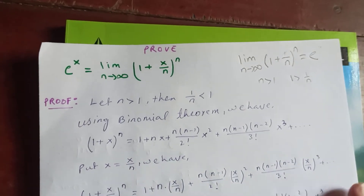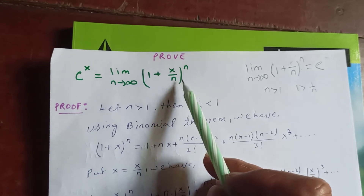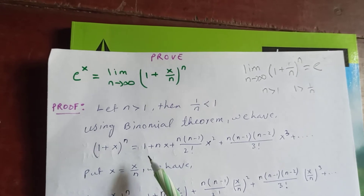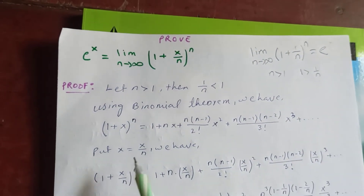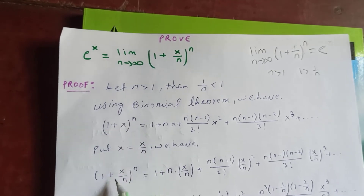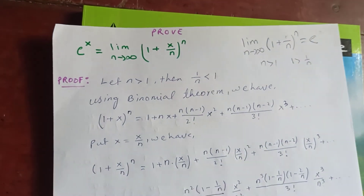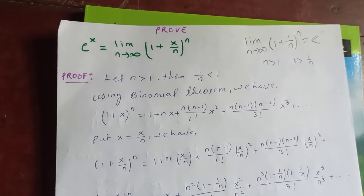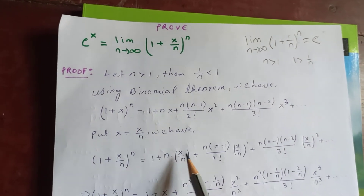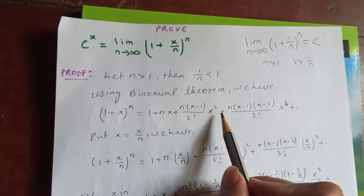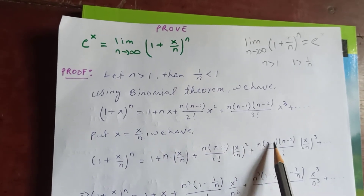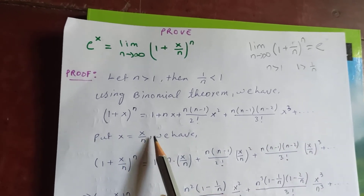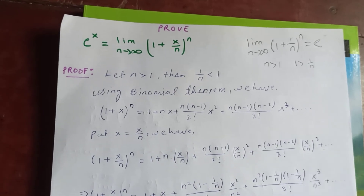Now we want to expand (1 + x/n)^n. Using the binomial expansion of (1 + x)^n, we substitute x equal to x/n. Therefore, (1 + x/n)^n equals 1 plus n·(x/n) plus (n−1)/2! · (x/n)² plus (n−1)(n−2)/3! · (x/n)³ plus and so on.